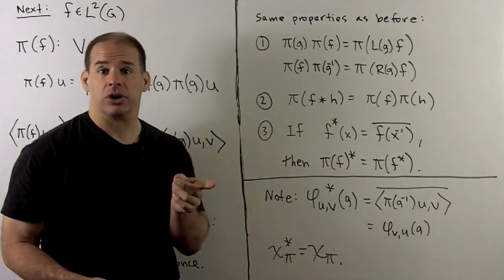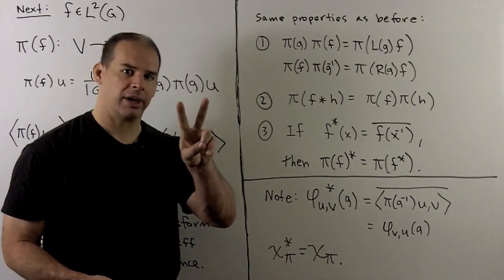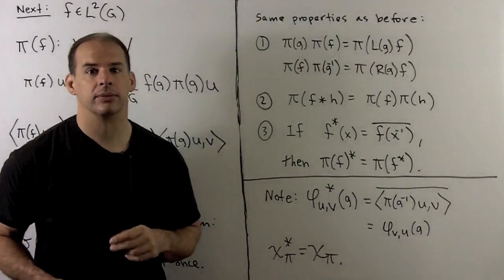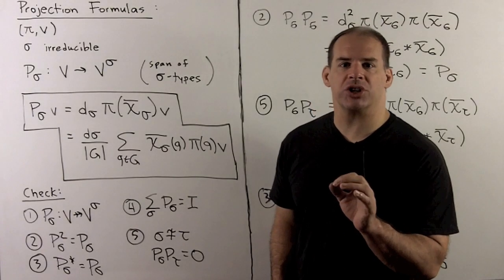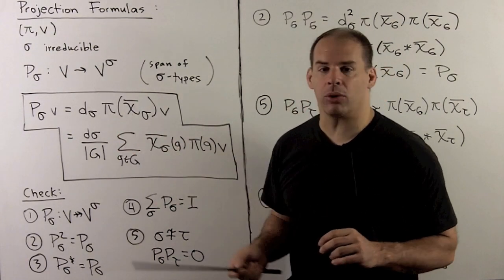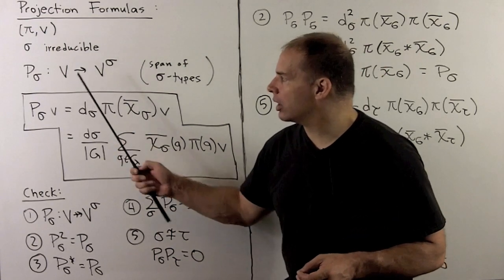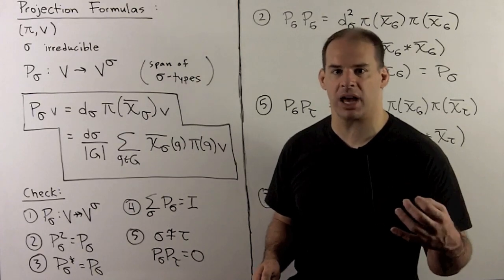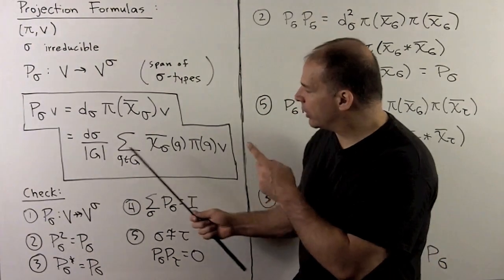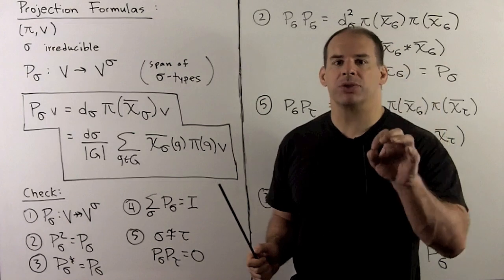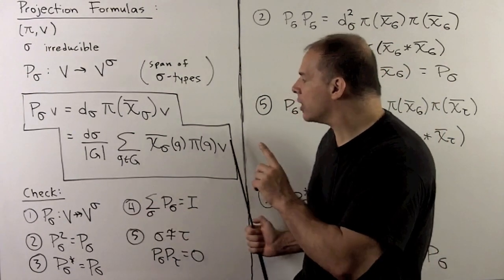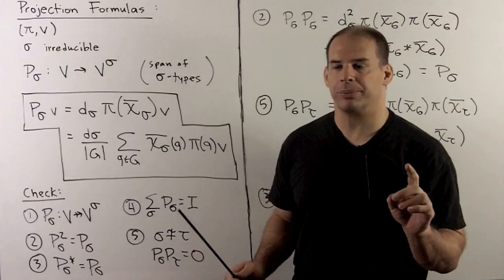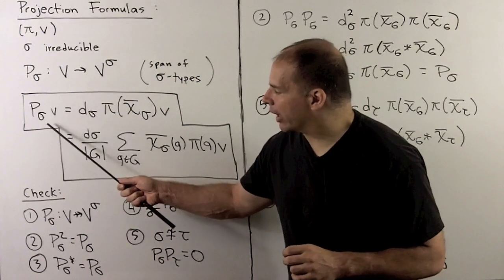We use weighted averages to define the projection operators onto spans of irreducible types. If pi V is any representation and sigma is an irreducible, the projection P sub sigma onto the span of sigma types is defined as the dimension of sigma times the weighted average of pi with respect to the complex conjugate of the character of sigma. Writing this out: pi(g) acts as an identity block for sigma and zero everywhere else, by the Schur orthogonality relations. To see that we have a projection operator, we need to check a few things.